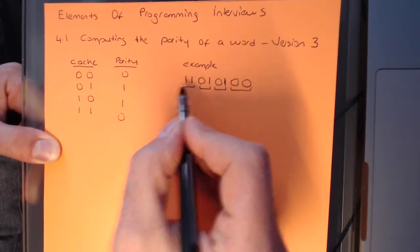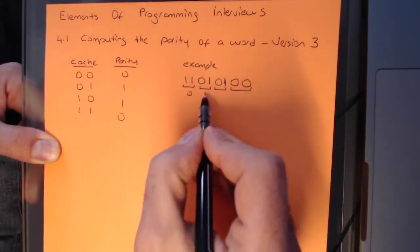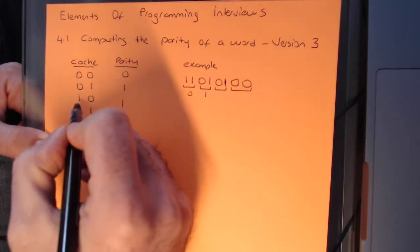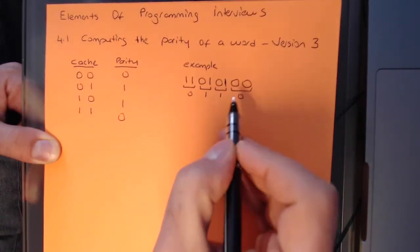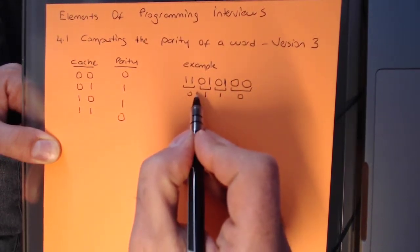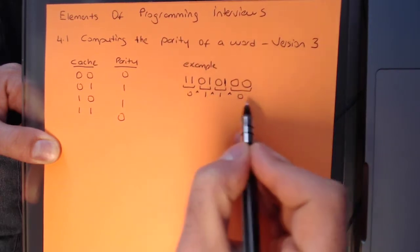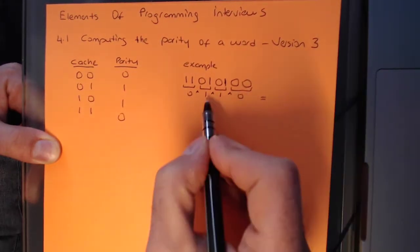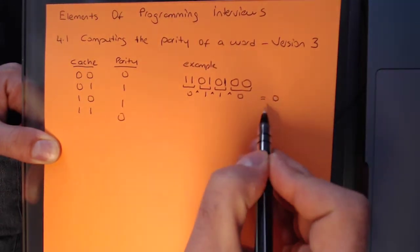So I know for 1-1, I have a parity of 0, for 0-1, I have a parity of 1, and I have 0-1, I have a parity of 1 again, and for 0-0, I have a parity of 0. With this approach, you're basically looking it up, and then you can XOR the results to get the total parity. This would be 1 XOR with 1, which is parity of 0.